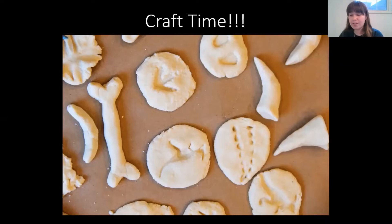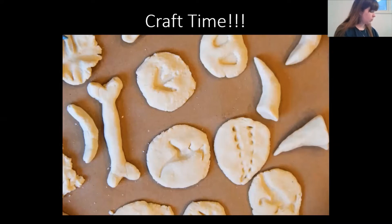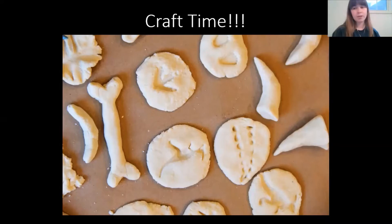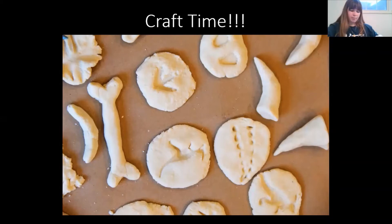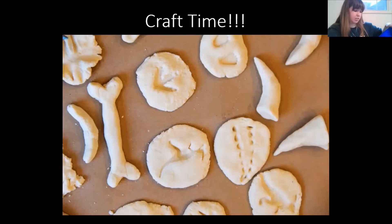The first thing we need to do is add flour and salt into our bowl. Add two tablespoons of flour, then one tablespoon of salt, and mix those two ingredients together. Nothing's really going to happen yet — they'll just stay kind of powdery. When we add the water, that's what's really going to make it turn into dough.